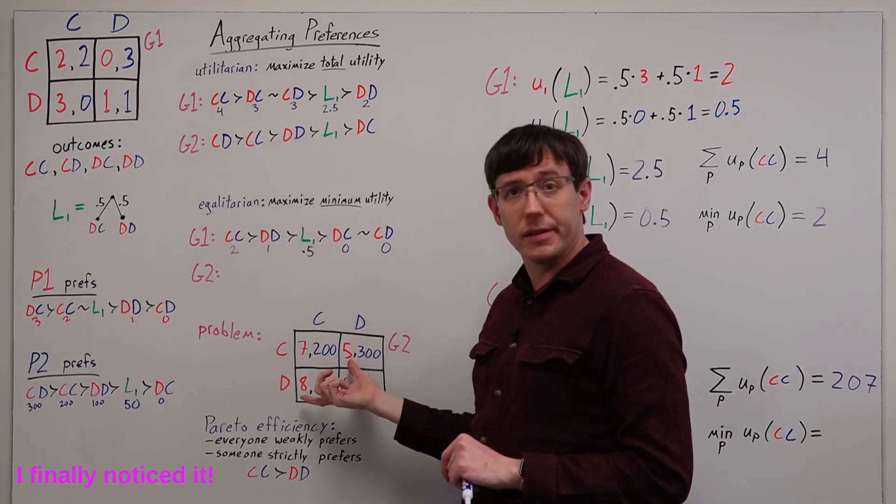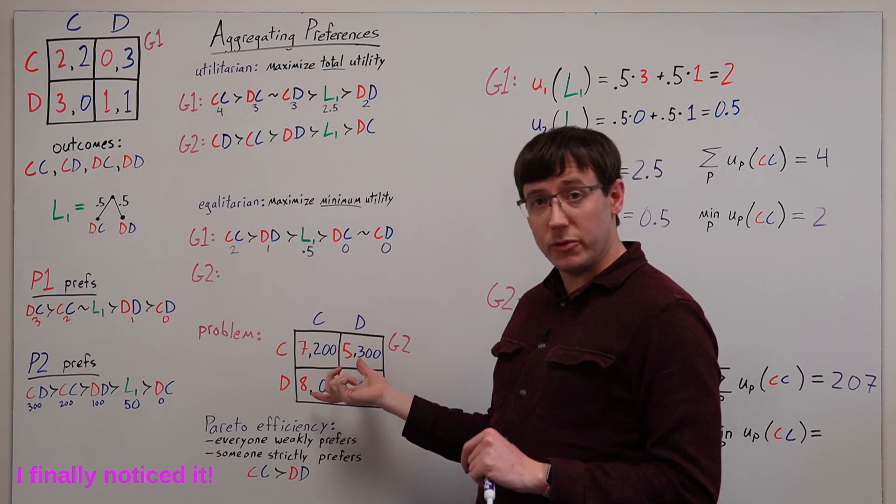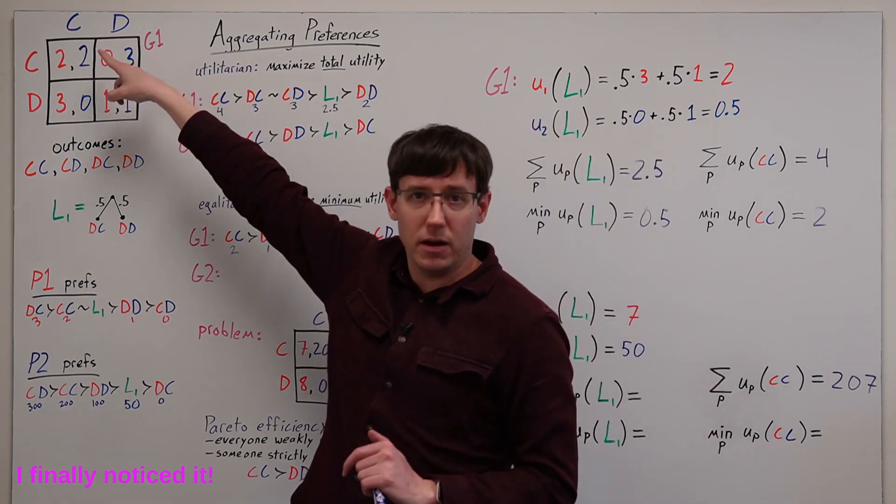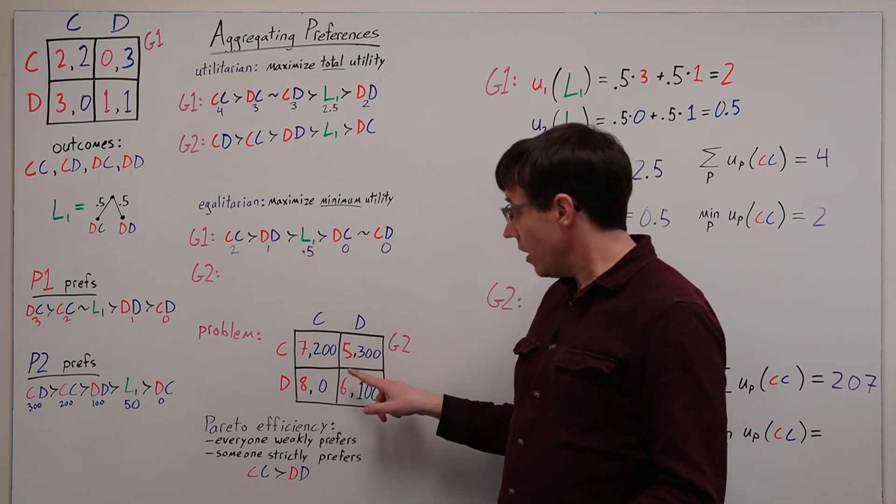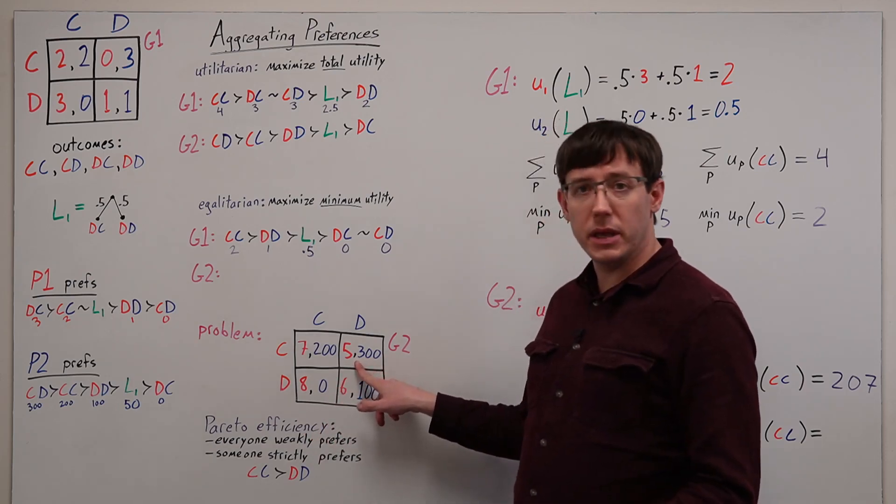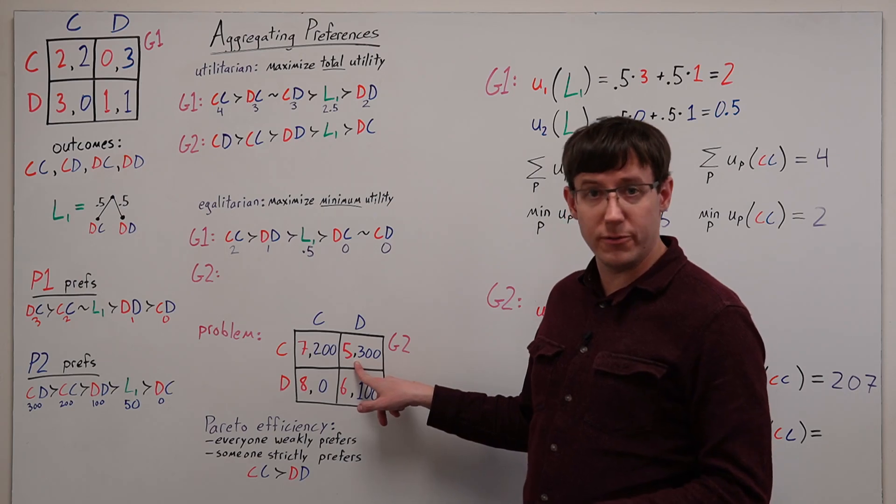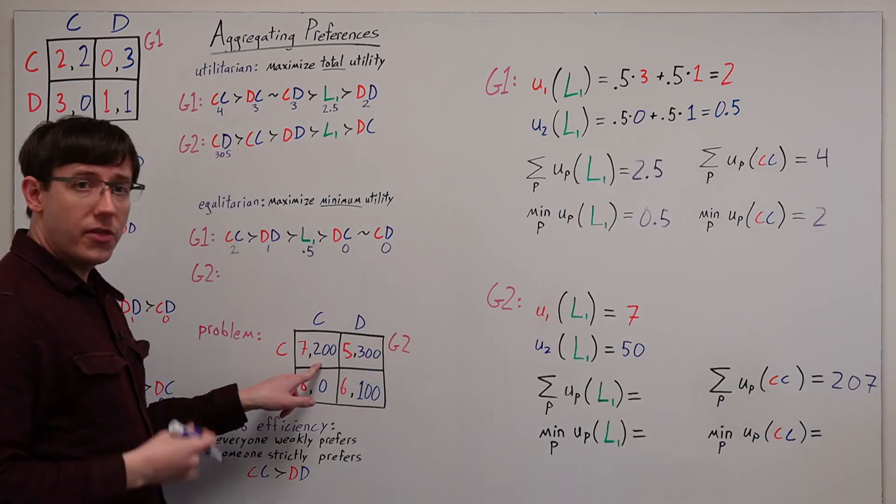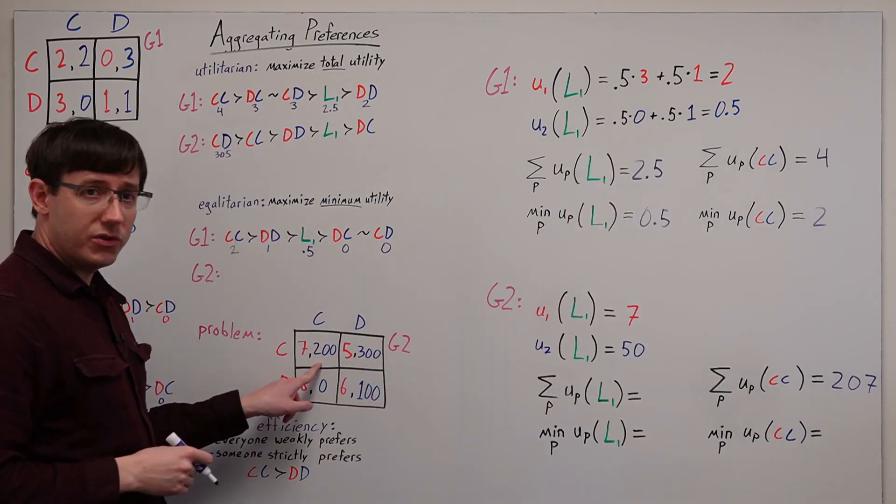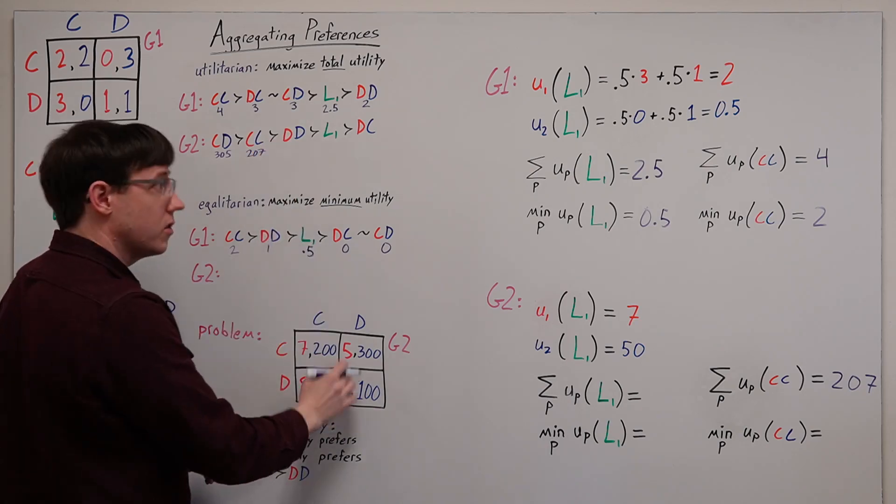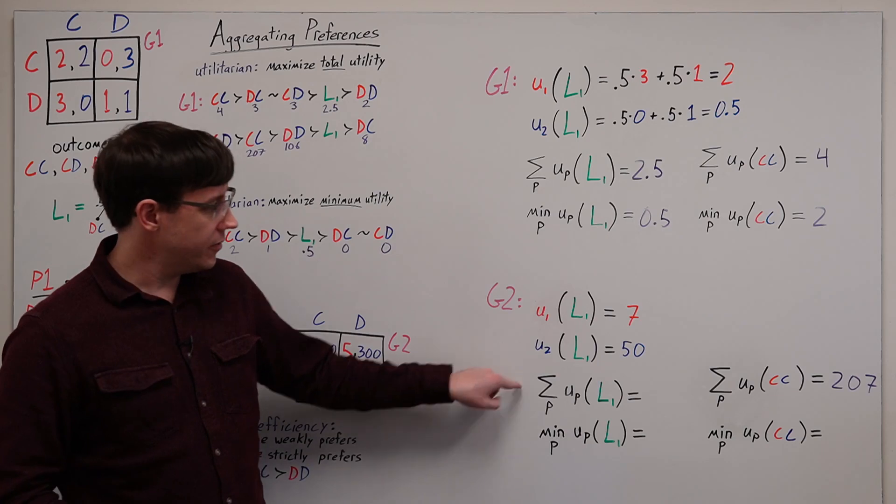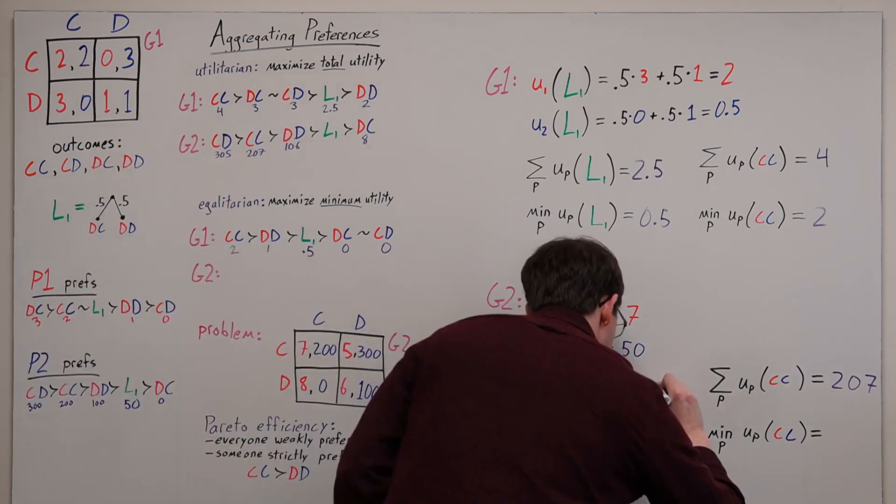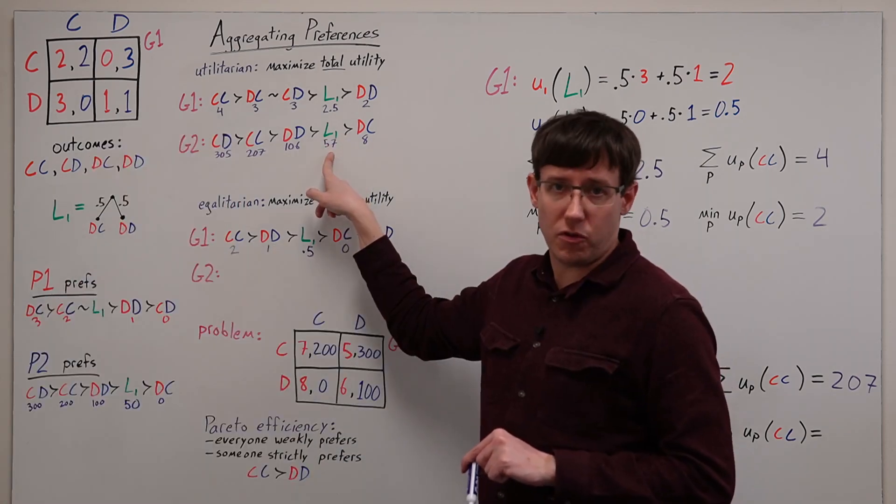These two utilities were backwards. Now they actually correspond to adding 5 to the original payoffs. When we rank according to the sum of utilities, the best outcome is this one with a total of 305, then CC with a total of 207, 106, and 8. For the lottery, the total payoff is the sum of the two expected payoffs, placing it in this position.